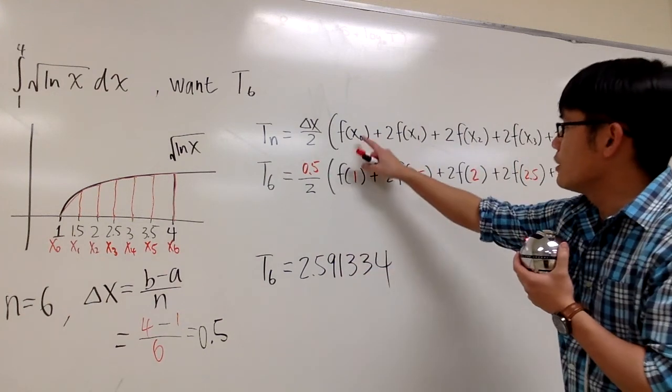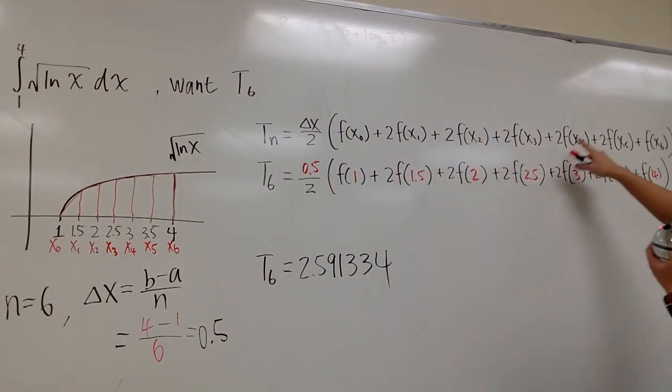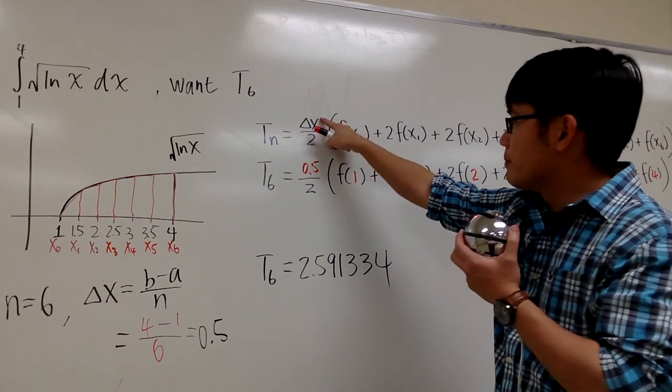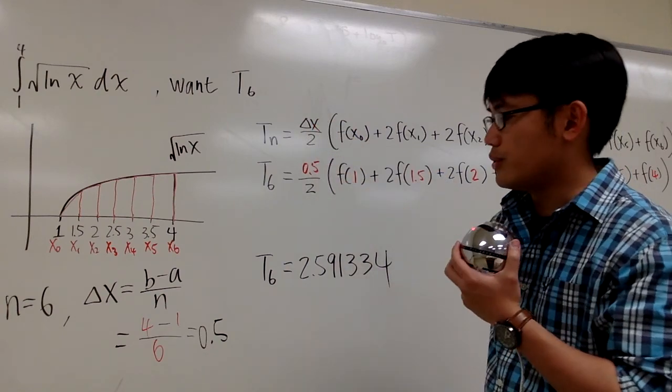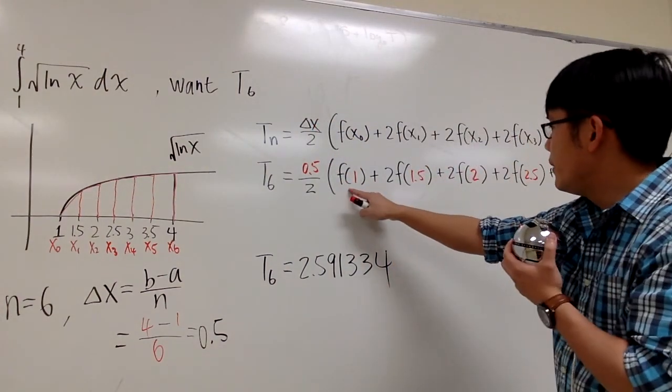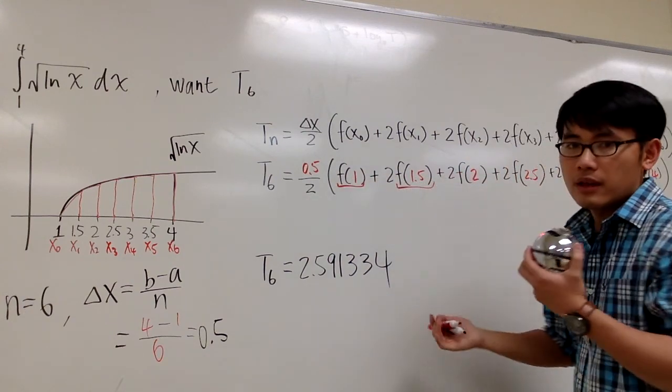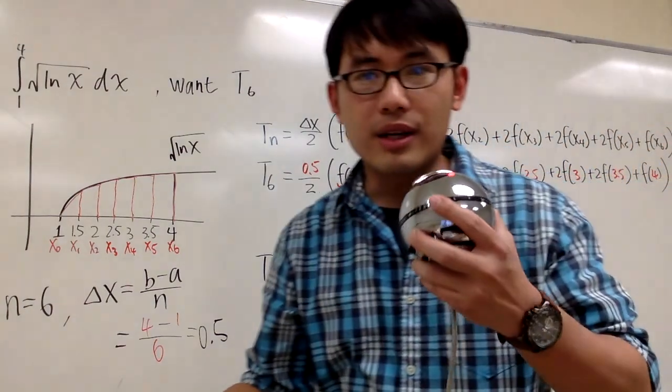So I'm pretty much just plugging all the corresponding x values into my formulas, and that's pretty much all I need to do. And also, I plug in the delta x, which is 0.5. And to figure out this guy, it's like the f of 1, f of 1.5. Let me show you guys how we can do that on the calculator.